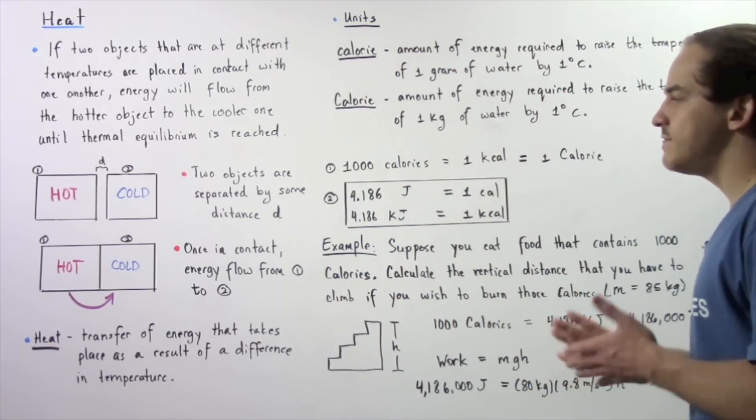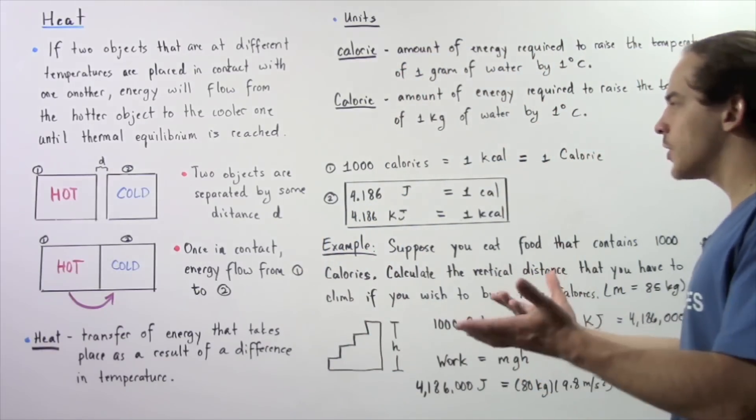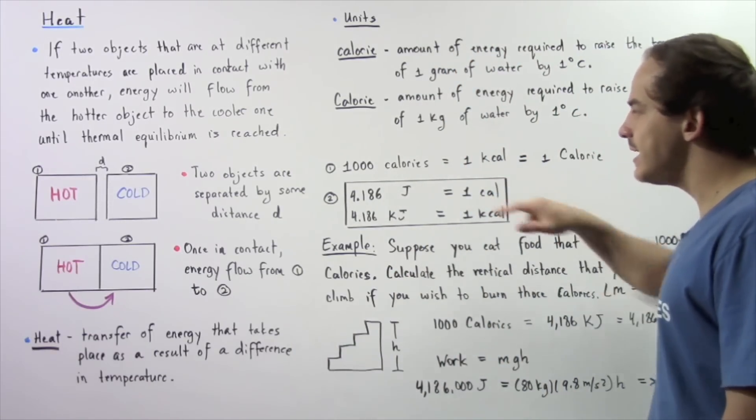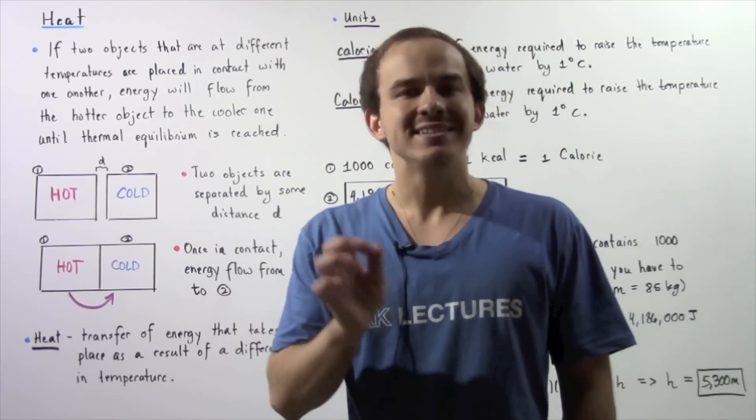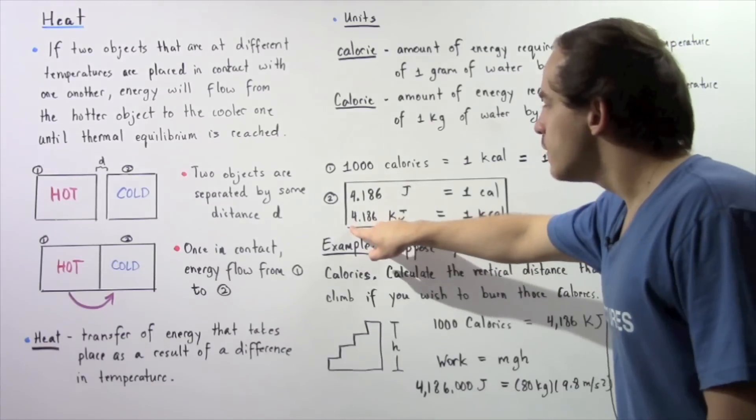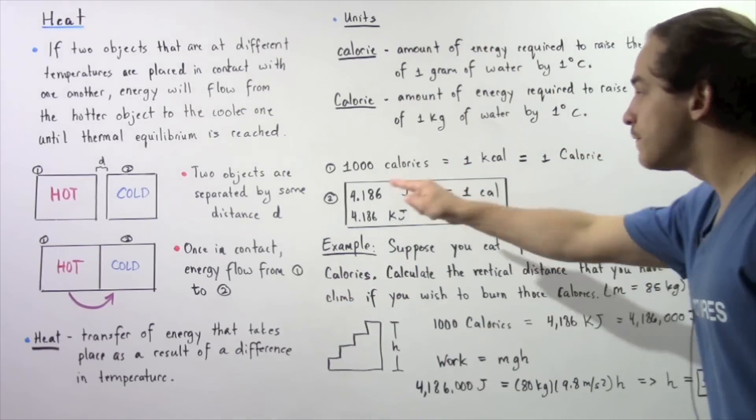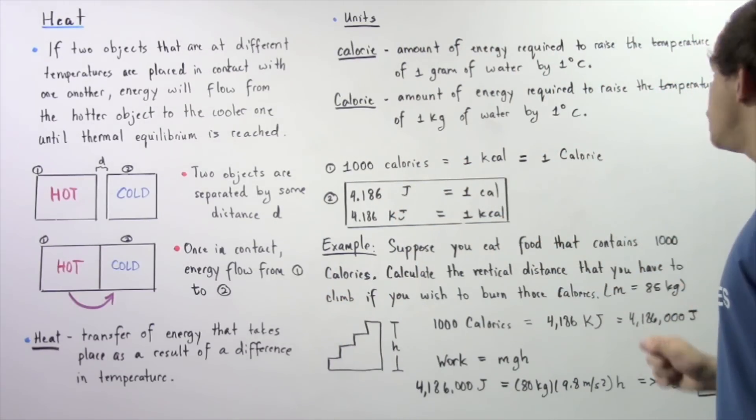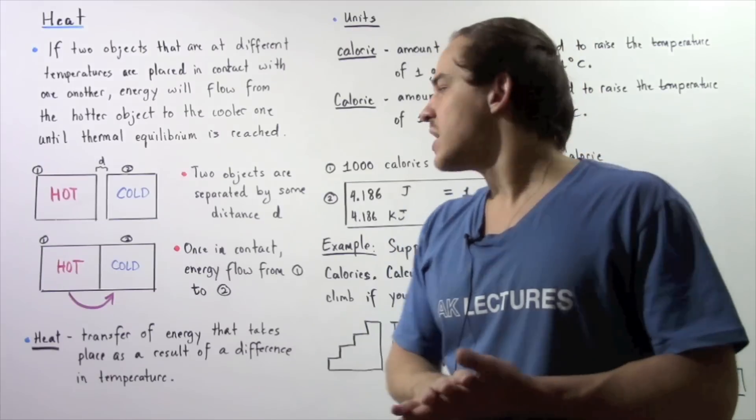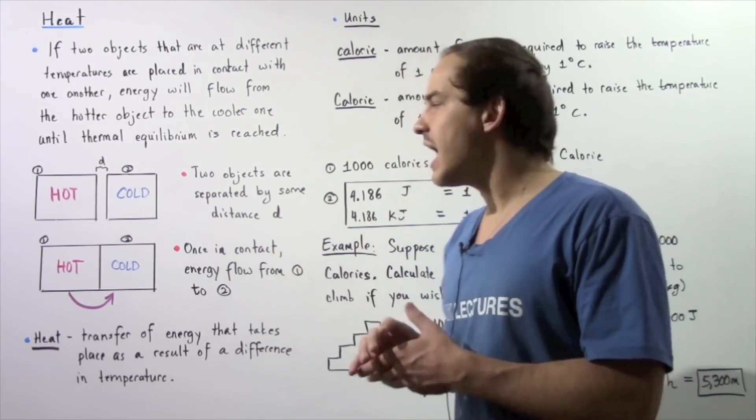Because energy is very commonly defined in terms of joules, we have to also talk about the conversion from calories to joules. It turns out that one calorie with a lowercase c is equal to 4.186 joules of energy, and one kilocalorie is equivalent to 4.186 kilojoules of energy. That means it takes 4.186 joules of energy to raise the temperature of one gram of water by one degree Celsius.